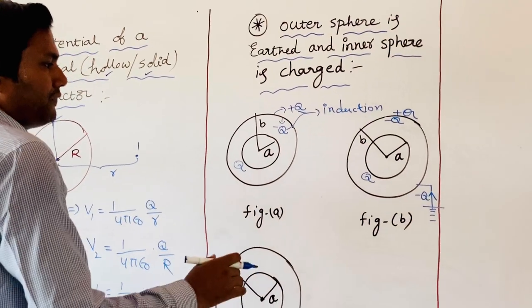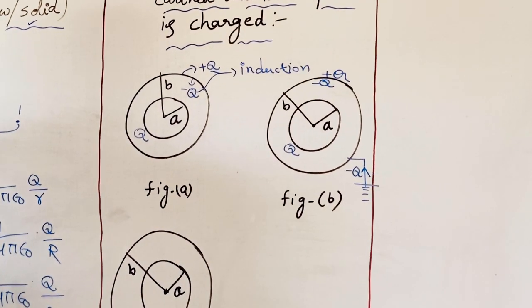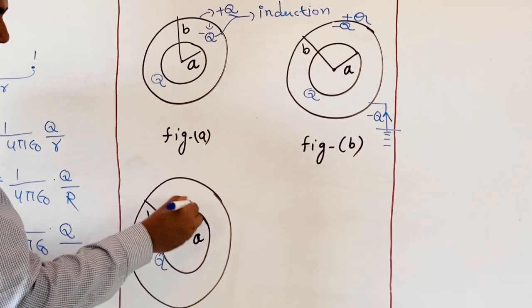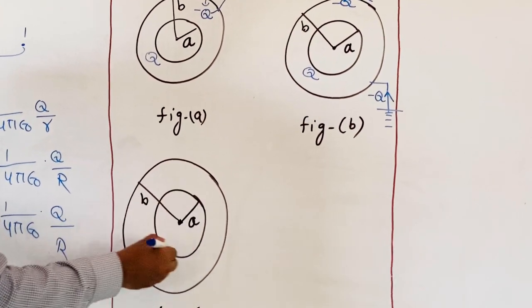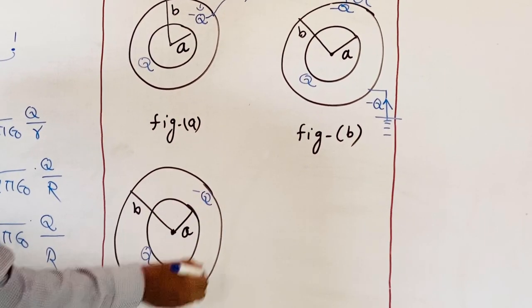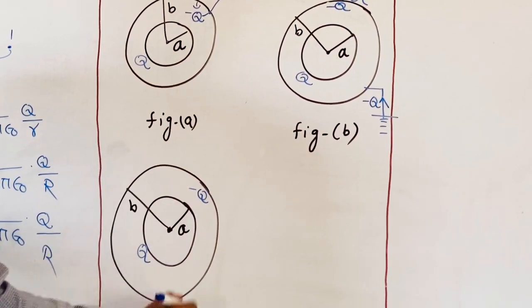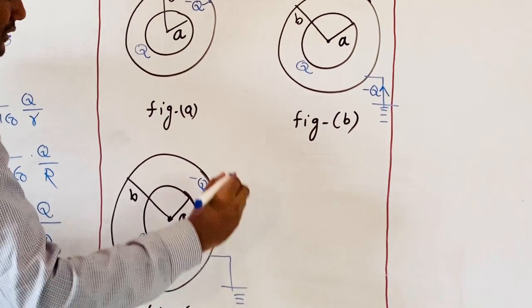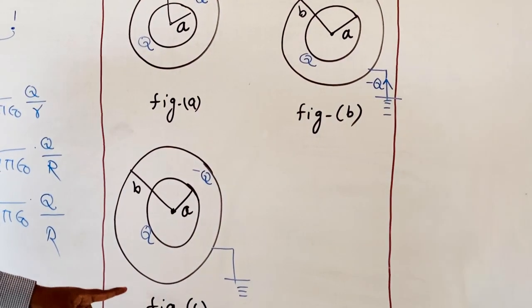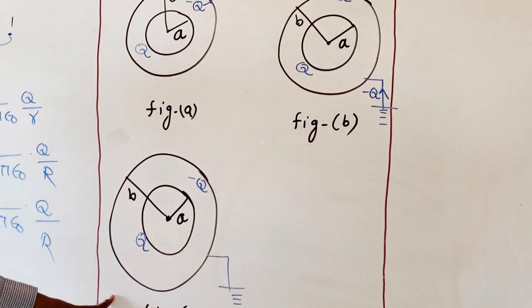So after earthing the outer sphere, the figure looks like: Q on the outer surface of the inner sphere, minus Q on the inner surface of the outer sphere, and there is no charge on the outer surface of the outer sphere. With the help of this figure C, what we need to calculate is the capacitance of this system.